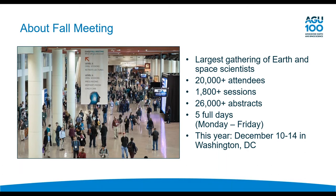The AGU fall meeting is the largest yearly gathering of earth and space scientists. It is huge — we regularly get more than 20,000 attendees and usually have more than 1,800 sessions. This year we've hit a pretty big record with more than 26,000 abstracts submitted so far. It's a behemoth — just a massive, massive meeting.